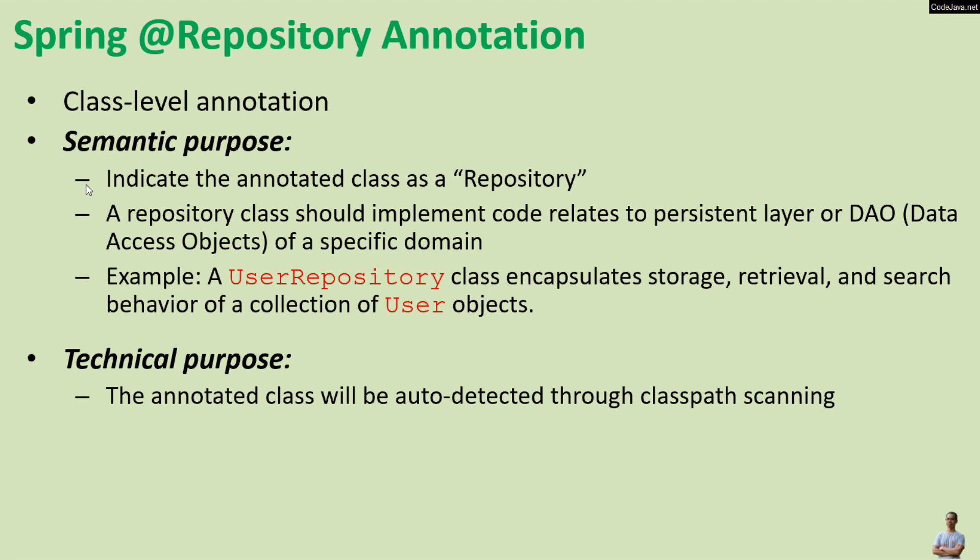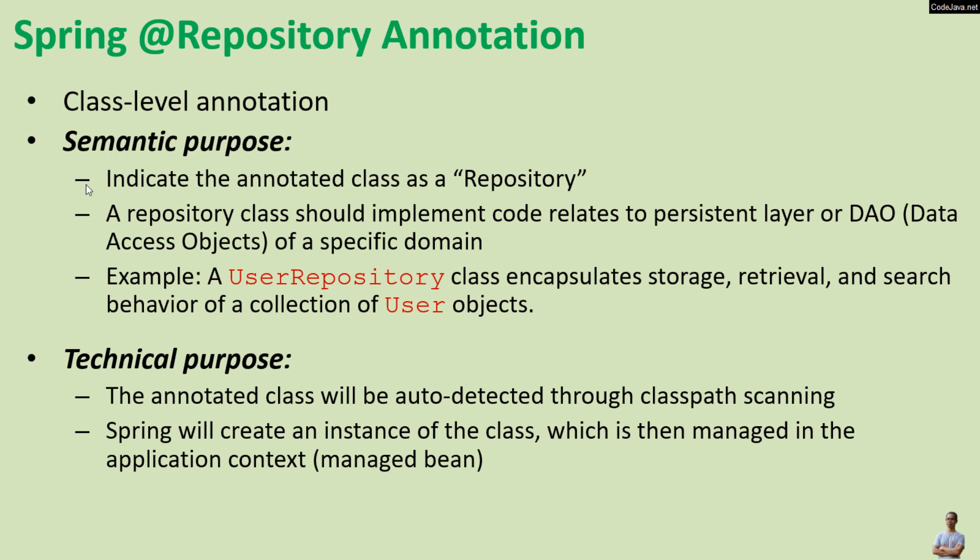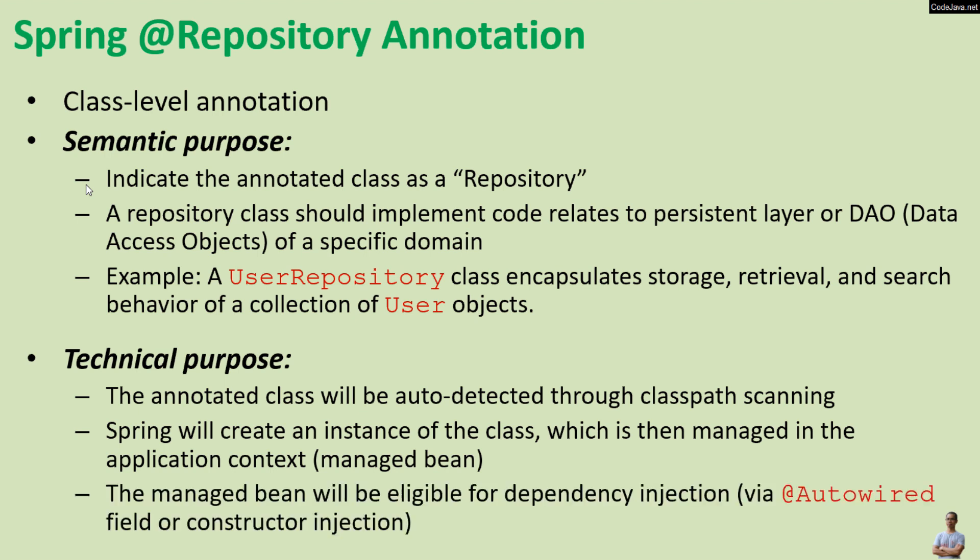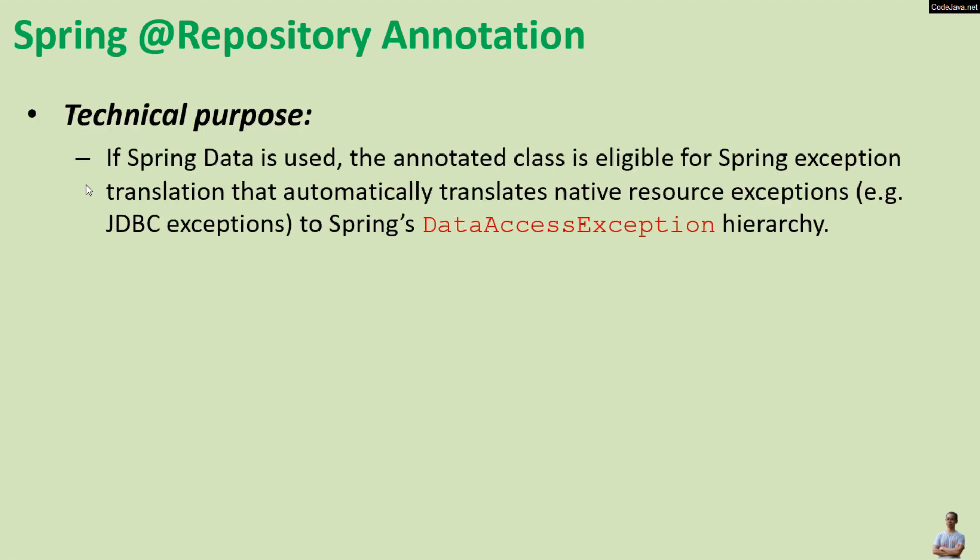The technical purpose of using the @Repository annotation is that the annotated class will be auto-detected through classpath scanning by Spring framework, and Spring will create an instance of the class which is then managed in the application context. The instance is called a managed bean, and the managed bean will be eligible for dependency injection such as via @Autowired field or constructor injection. If Spring Data is used, the annotated class is also eligible for Spring exception translation, which automatically translates native resource exceptions such as JDBC exceptions to Spring's data access exception hierarchy.